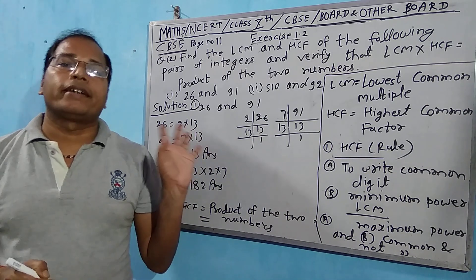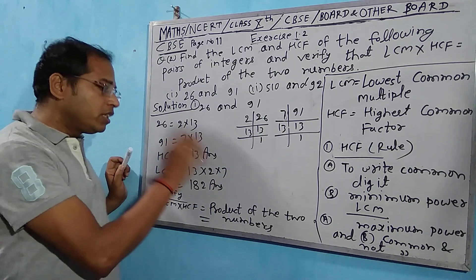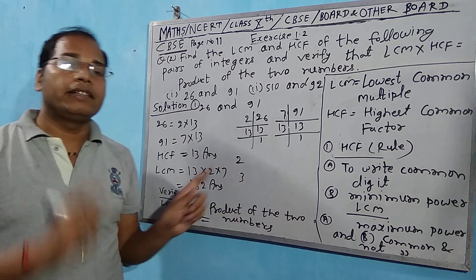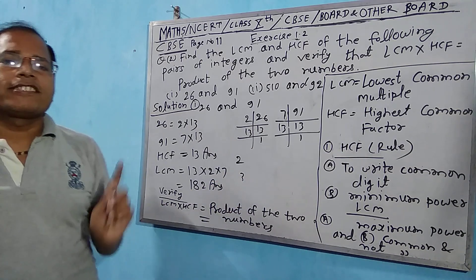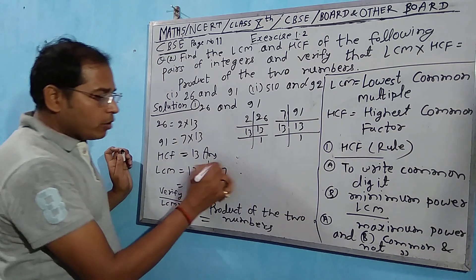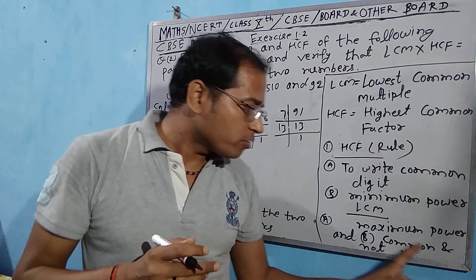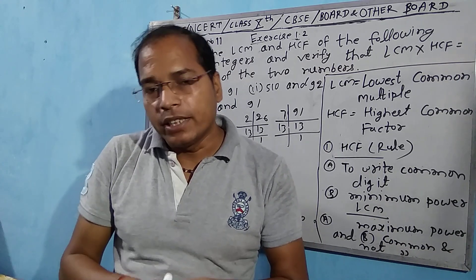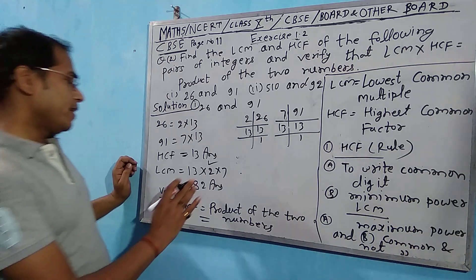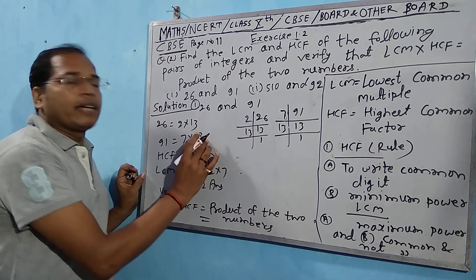What is common in both? 13 is common in both numbers. So for HCF, we write 13. Always remember: for HCF write the common factor with less power (minimum power), and for LCM write the maximum power. So HCF here is 13. For LCM, write maximum power of all prime factors. From both, 2, 7, and 13 appear, so LCM = 2 × 7 × 13 = 182.